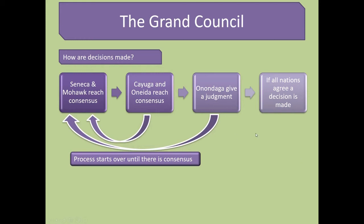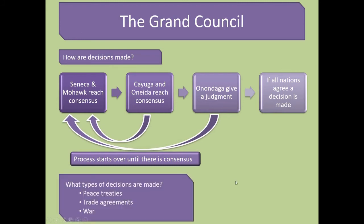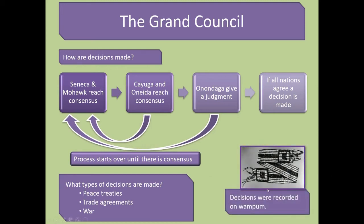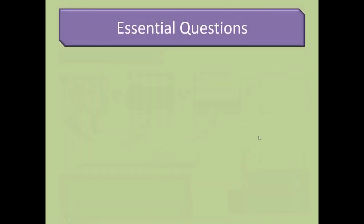All of these things would have been recorded on something called a wampum belt, which we'll talk about again in our next lesson. A wampum belt is how the Iroquois, or the Haudenosaunee, recorded any treaties, messages, or important decisions that got made. There are basically three major types of decisions they would look at: peace treaties between the nations, trade agreements, and war. Those were the three major types of decisions that the Grand Council would make, and the decisions would be recorded on a wampum belt.